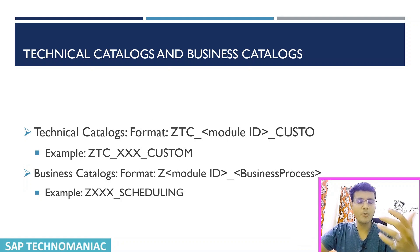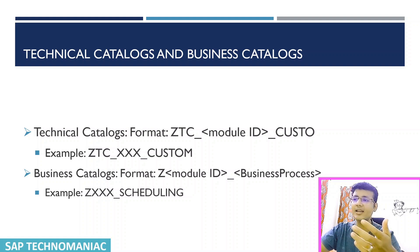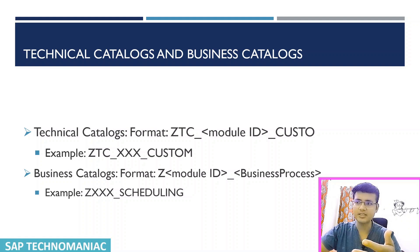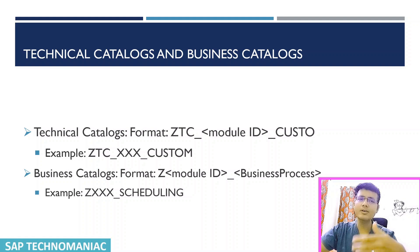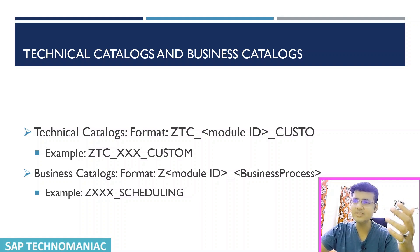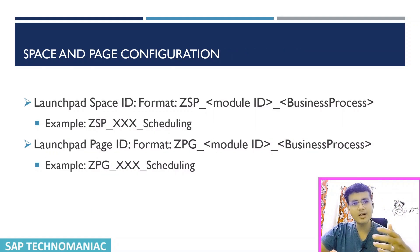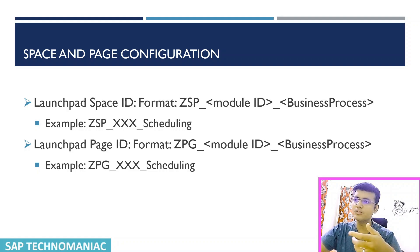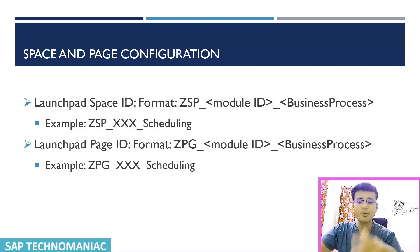For the Fiori launchpad configuration, when creating technical catalogs, start with ZTC. For business catalogs, use the module name directly with the description. When creating new spaces, use ZSP, and for pages use ZPG — give the module name and an appropriate description. What catalogs, pages, and spaces are will be discussed in a separate Fiori series, but naming convention-wise, you can follow these guidelines.